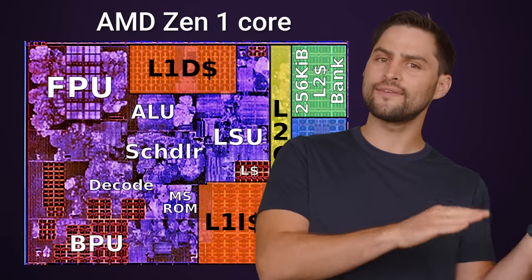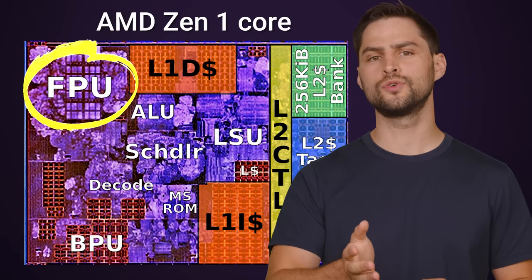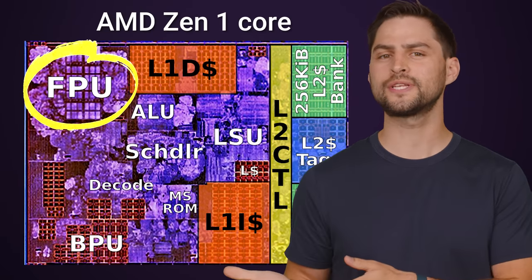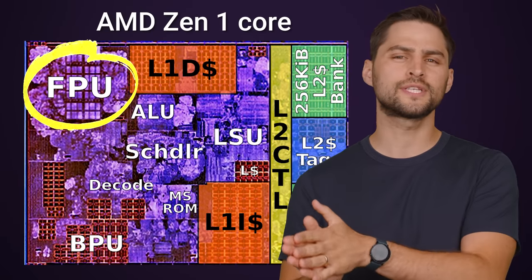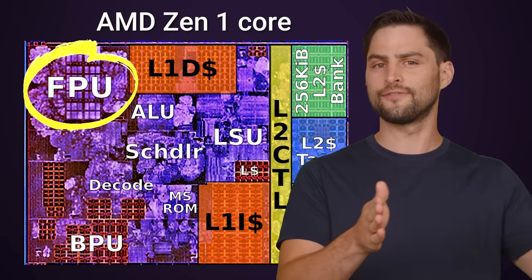Cores often also have a floating point unit, or FPU, which is similar to an ALU but deals with number sets that have their decimal points in different places.